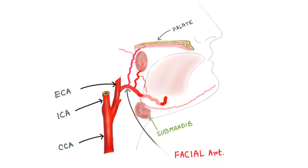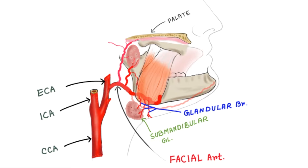The glandular branch consists of three to four large vessels which supply the submandibular gland and sometimes neighboring muscles, lymph glands, and skin.